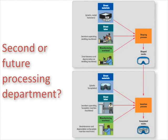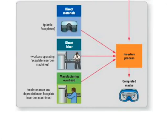We've discussed the shaping process. Now we need to discuss how that cost comes down from the shaping department into the insertion process, as well as additional direct materials, direct labor, and manufacturing overhead being applied to that second process, eventually giving us a finished product — a completed mask.